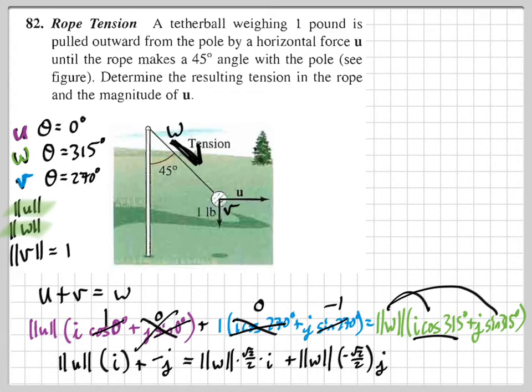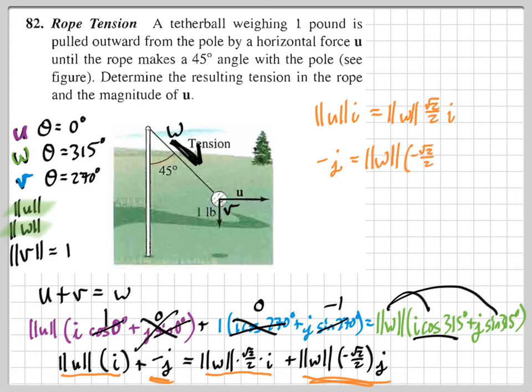Now I see this is going to be our problem here. The magnitude of I is supposed to equal this. So the magnitude of U times I is supposed to equal the magnitude of W times √2 over 2 times I. And then the other one is negative 1J is supposed to equal the magnitude of W times negative √2 over 2 times J.